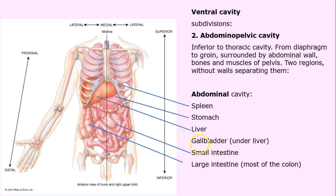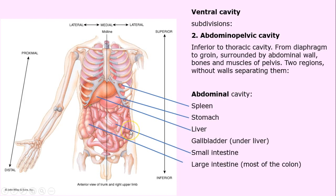Two regions: the abdominal and the pelvic. In the abdominal region we have the spleen — we think of immunity — the stomach, the liver, which is huge, the gallbladder nestled under the liver which squirts out bile and helps process fatty foods, the small intestines, and the large intestine, also known as the colon.